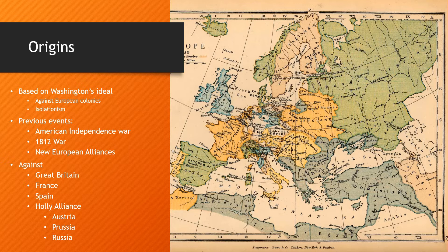Previously, the whole American continent was colonized by European powers, mainly Spain and Great Britain. But the rise of American independence along with other Latin American independence movements in the 18th and 19th centuries ended most of the European control in the region. The American independence from Great Britain in 1776 created tensions between both countries, which continued in the War of 1812.